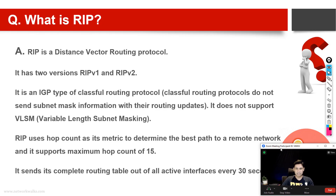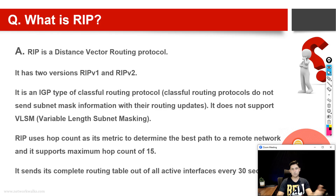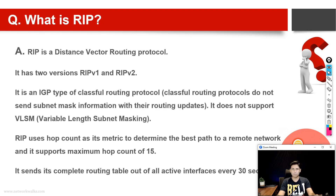RIP sends a complete routing table out all interfaces every 30 seconds. RIP version 2 also sends triggered updates, meaning if any change happens before 30 seconds, it sends an immediate update without waiting. So RIP has two versions, it is an IGP distance vector routing protocol, it supports VLSM, uses hop count for best path, and sends updates every 30 seconds.